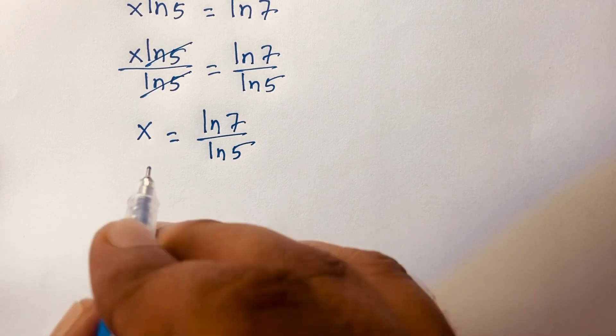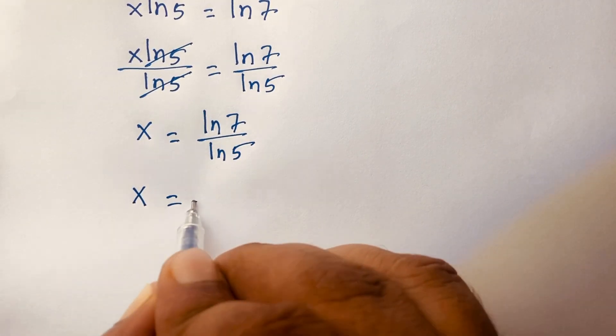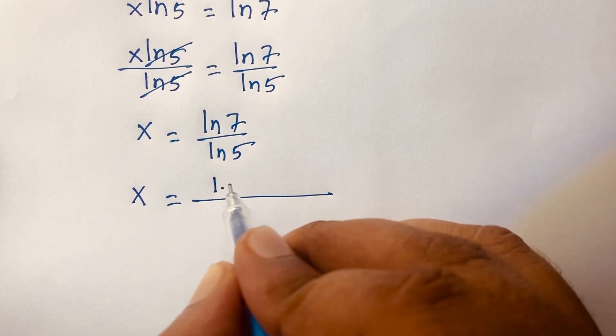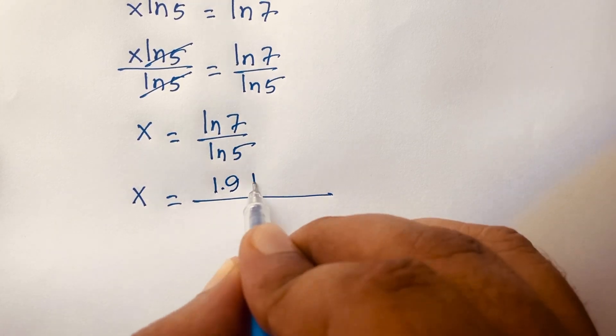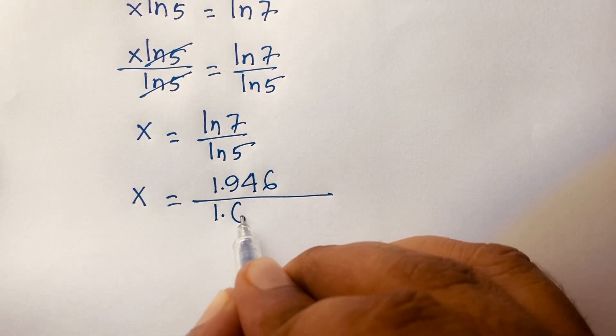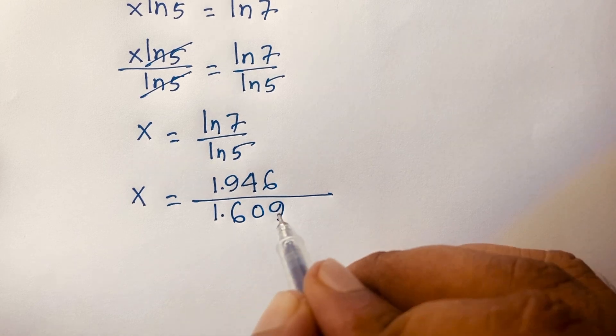It is equal to, here is ln 7, it will be 1.946, and ln 5, it will be 1.609. I use calculator.